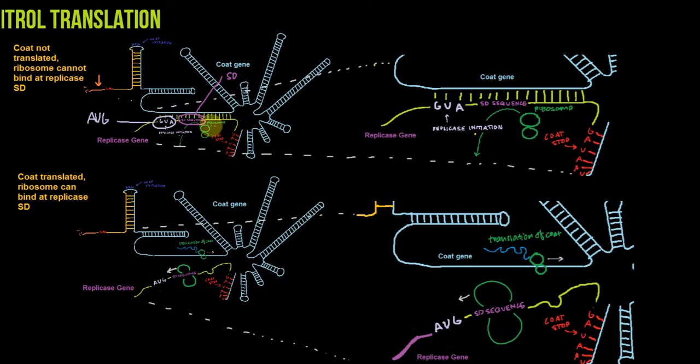And finally, as we move this way, we've got a Shine-Dalgarno sequence. It's a little bit hard to see, so I've drawn it a little bit bigger here. The Shine-Dalgarno sequence and the replicase initiation codon, this AUG for the replicase gene, which is shown all the way down here, which is shown in this direction. The replicase gene continues on over here.